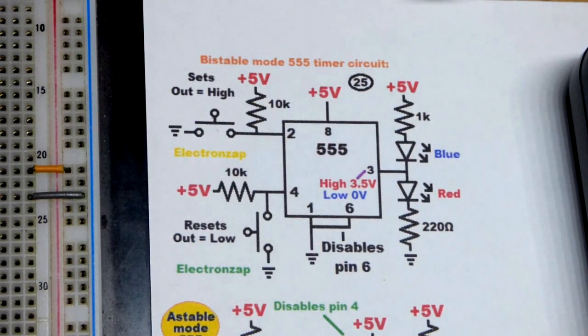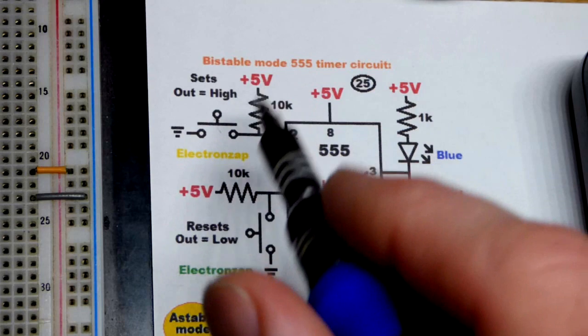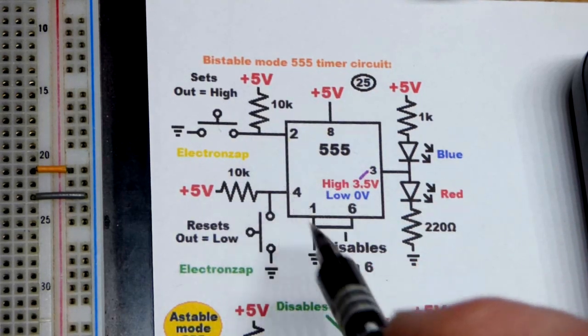We will come over to the schematic to look at it closer and you can see pin 2 and pin 4 both have a pull-up resistor that prevents it from doing anything.